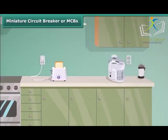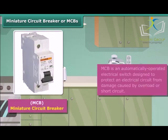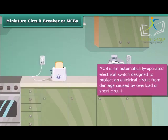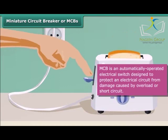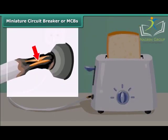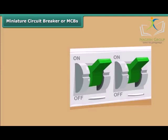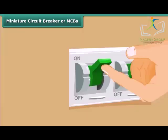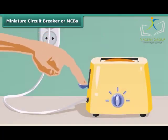A miniature circuit breaker, or MCB, is an automatically operated electrical switch designed to protect an electrical circuit from damage caused by overload or short circuit. Whenever there is a fault in a circuit, the MCB interrupts continuity to discontinue electrical flow immediately. It can be reset to resume normal operation.